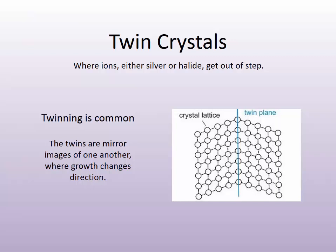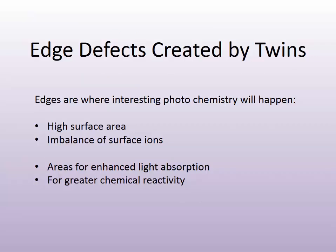At the bottom of this slide, you'll see ions moving in the direction of the 111 face, and they're all the same ions — you can imagine these being all halides or all silver. A twin is where they get out of step: they start growing in one direction, and then they slip, and the plate starts growing into the other direction. You end up with this twinned plate — a set of plates with an edge as shown on the right-hand side of the slide. It's a mirror image, almost like you've taken two plates and glued them together. This creates what is known as an edge defect, and on these edges you've got high surface area and imbalance of surface ions. This is going to be the site where a lot of very interesting photochemistry happens.